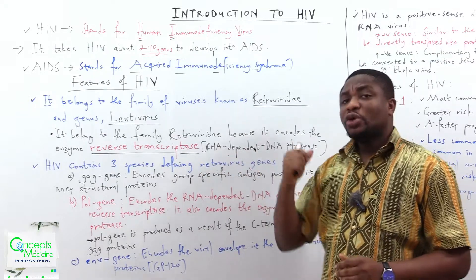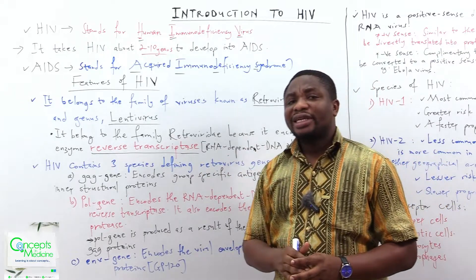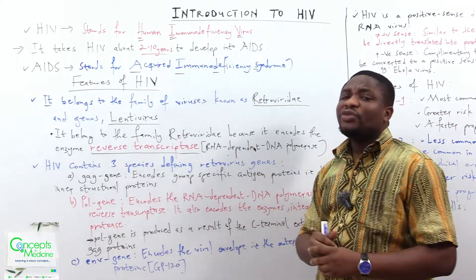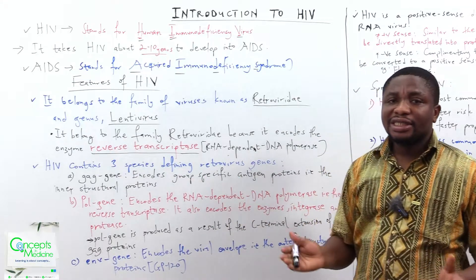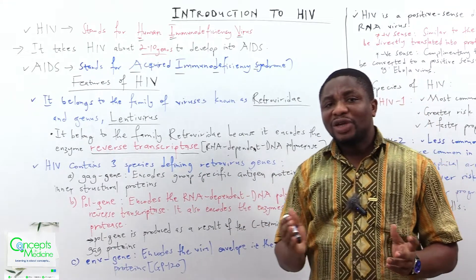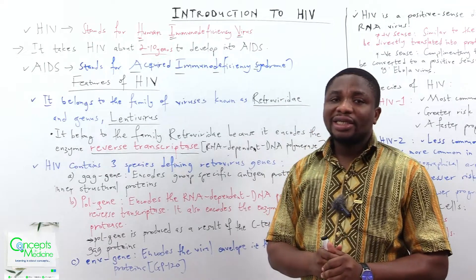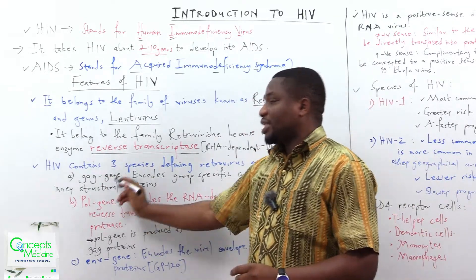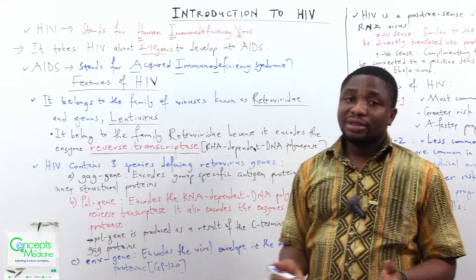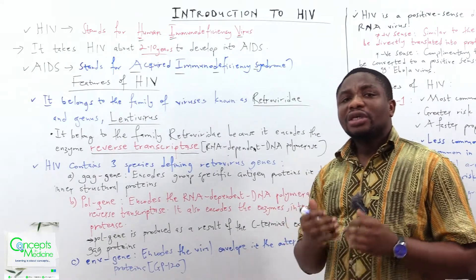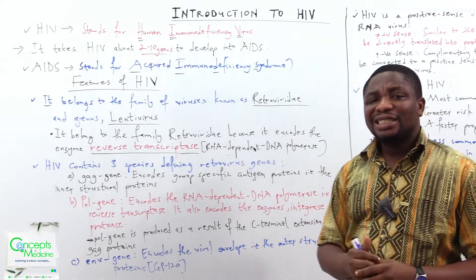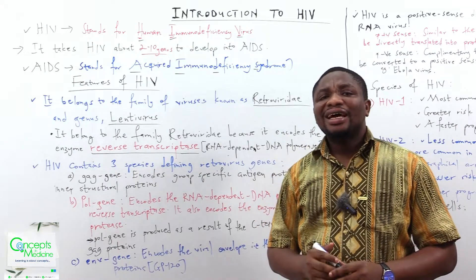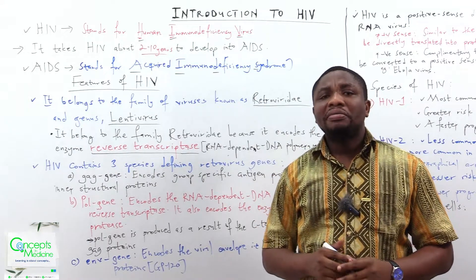You should also know that HIV contains three species-defining retrovirus genes. The first one is called the GAG gene. What does it do? It encodes group-specific antigen proteins — that is, we are looking at the inner structural proteins.